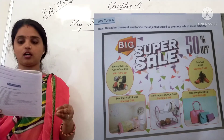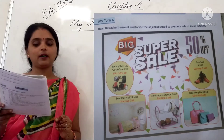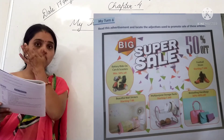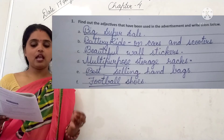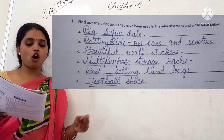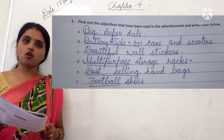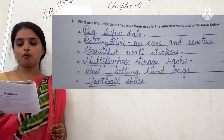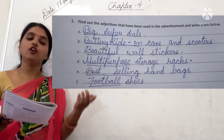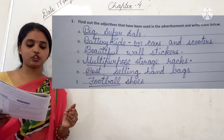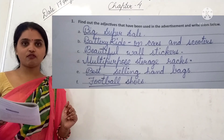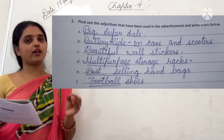The first adjective used to promote the sale is 'big super sale' — so 'big' and 'super' are the adjectives. Next: 'battery ride on cars and scooters, minimum 30 percent off' — here 'battery ride' is the adjective. Next: 'football shoes starting at 5.99' — 'football' is the adjective describing the shoes. Next: 'beautiful wall stickers' — adjective is 'beautiful.' Next: 'multipurpose storage racks' — adjective is 'multipurpose.'